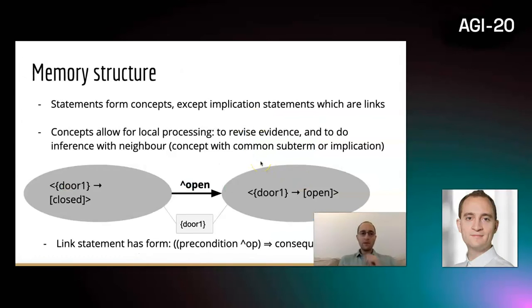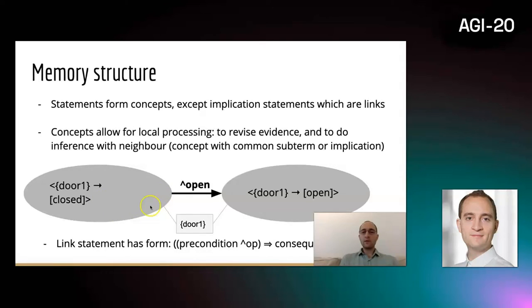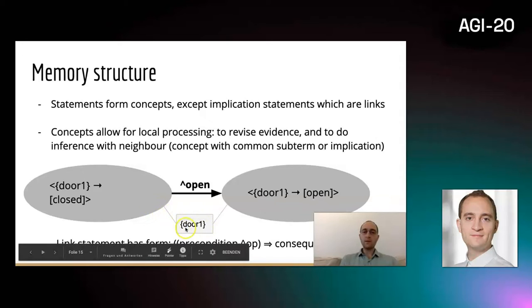In concept memory, statements form concepts except implication statements, which are links between concepts. Concepts allow for local processing to revise evidence. For instance, if the door is closed, it gets more and more evidence, it will revise it up. Also, concepts can do inference with the neighbors. This can happen via a common subterm, like door one in this case, or via implication.